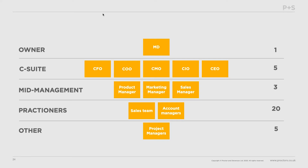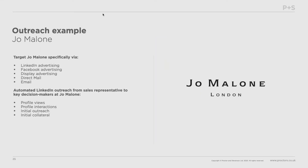We're finding that's incredibly useful and valuable in the effectiveness of our marketing. Here's an example from research we did when developing a campaign for one of our clients. One of the target companies we identified was Jo Malone. We were going to target them with LinkedIn advertising, Facebook, display, direct mail, and email, supplemented with automated LinkedIn outreach from the client's sales representatives to key decision makers at Jo Malone — profile views, profile interactions, automated connection requests, and initial collateral for them to engage with.